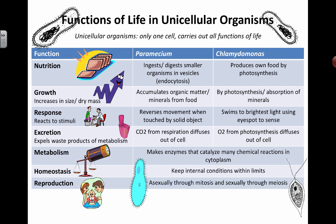Both of these unicellular organisms have the ability to switch between reproducing asexually through mitosis and sexually through meiosis. It's a pretty cool thing to have — choices are great.